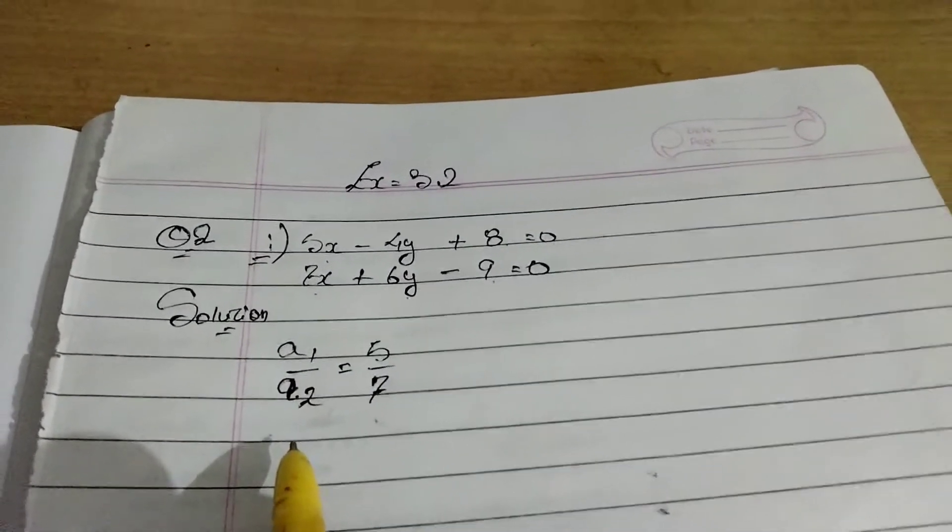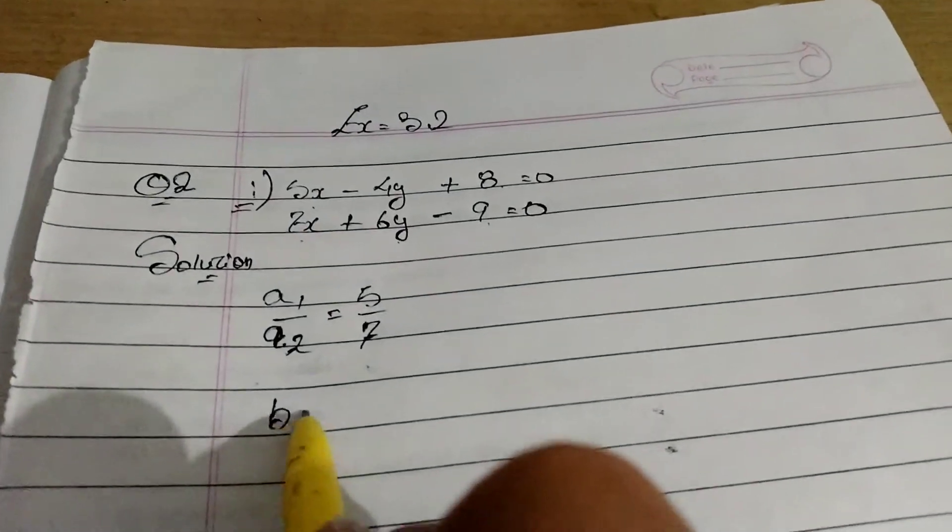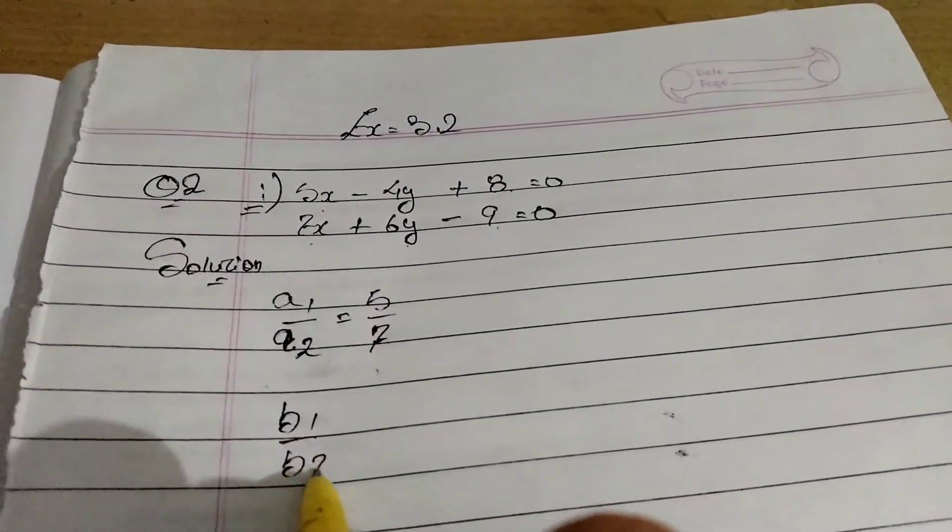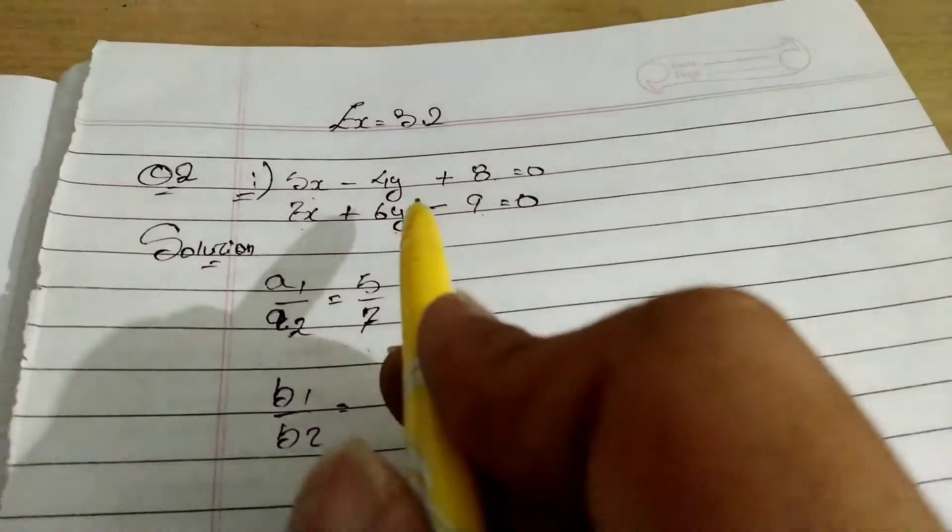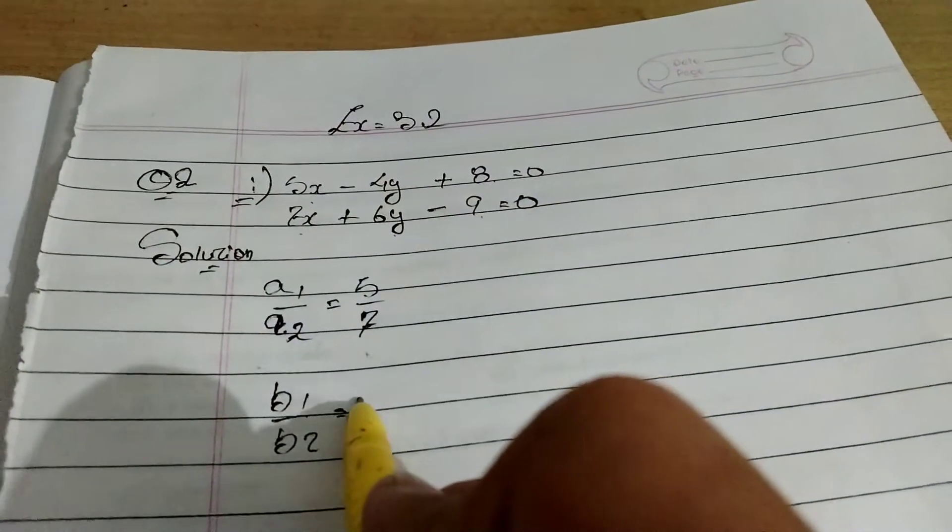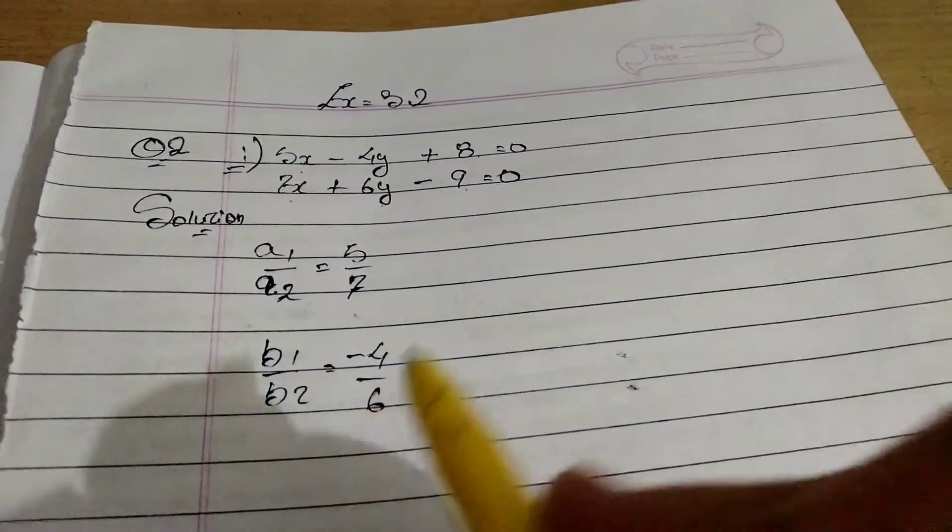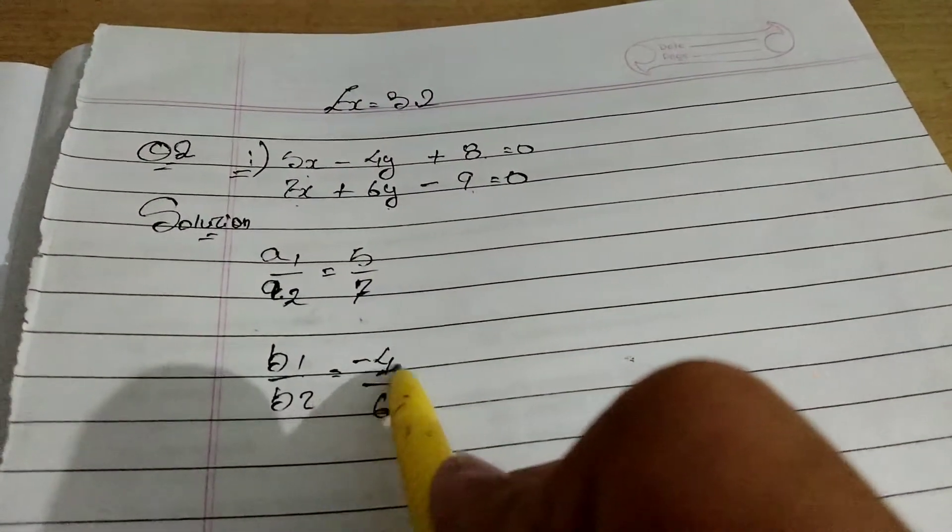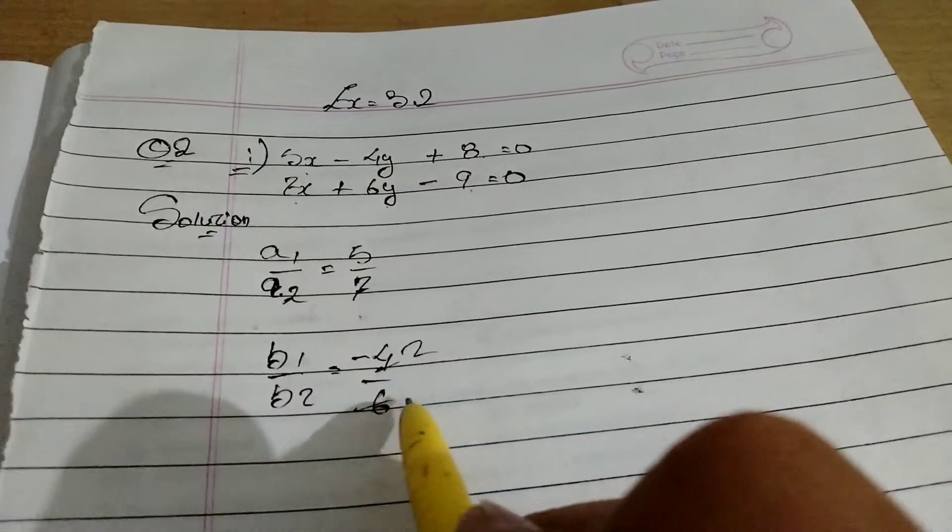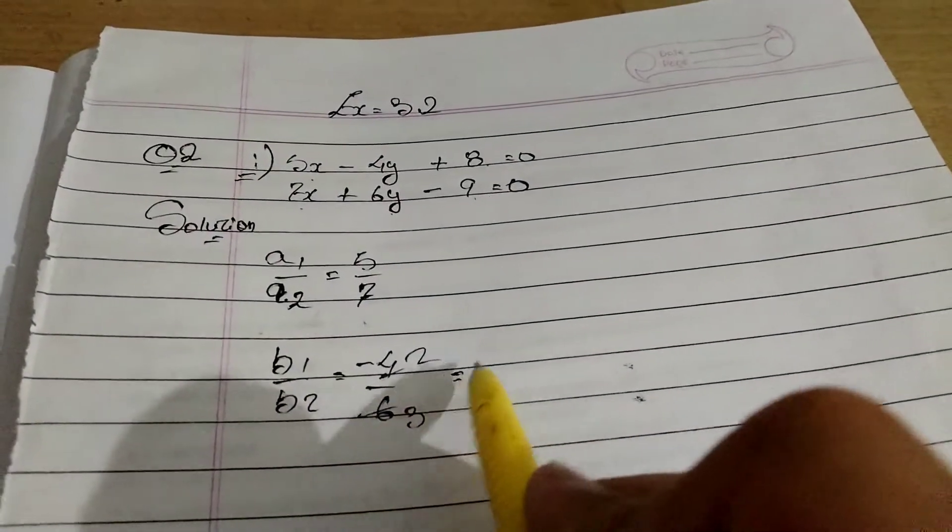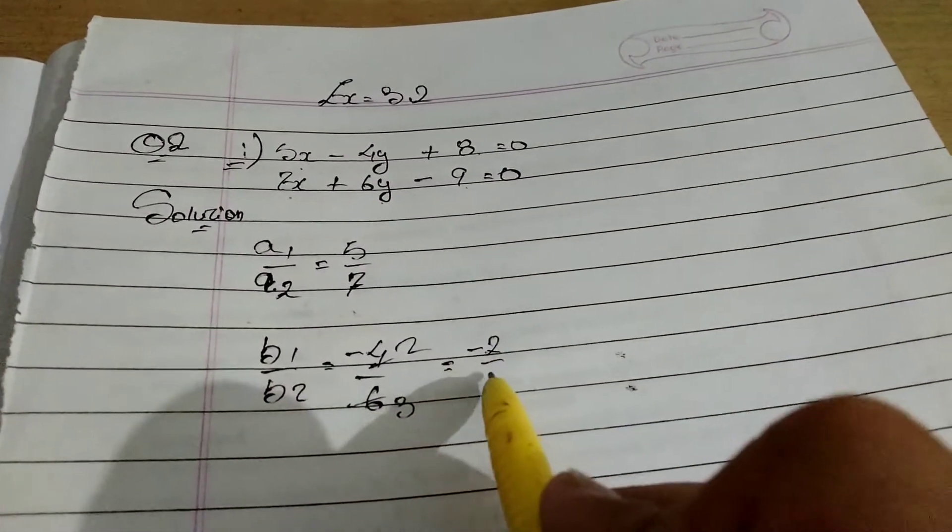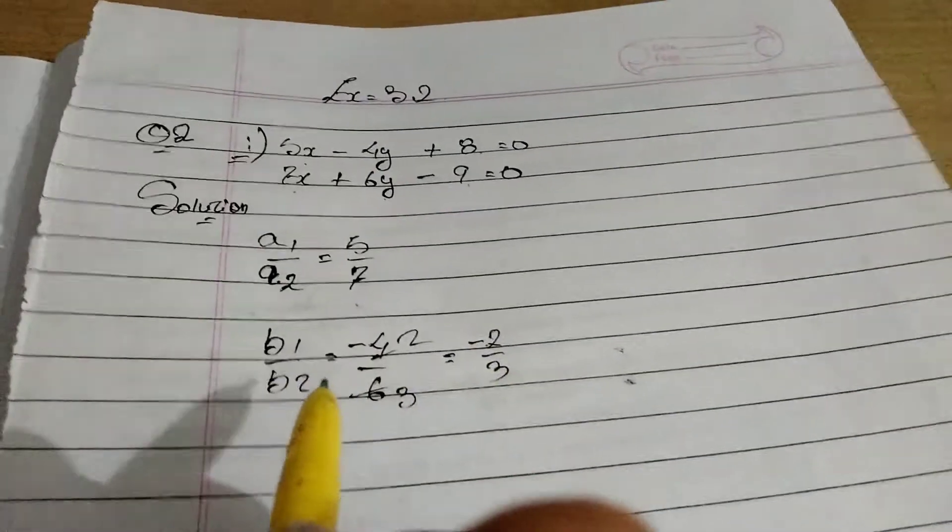So let's do next. That is B1 and B2. B1 is minus 4. B2 is 6. Can we cut them? Yes. With 2. 2 twos are 4, 2 sixes are 3. So we have minus 2 by 3.